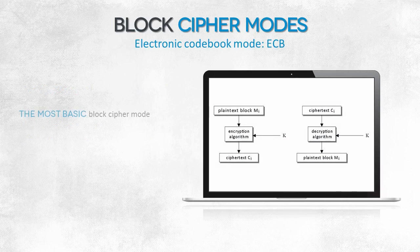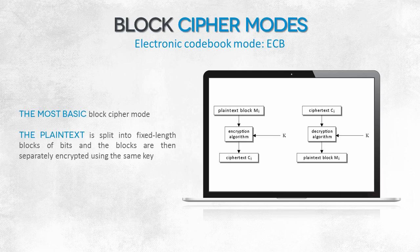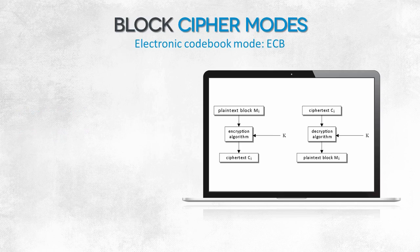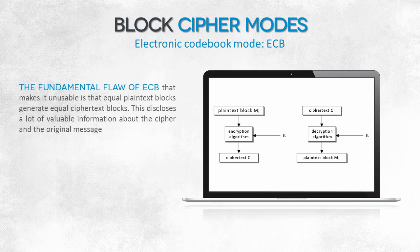Let's start with the electronic codebook mode. Assume you're a programmer. Your task is to split a long data block into pieces and perform the same operation on each piece. What should you do? Write a loop — split the data into pieces, encrypt the first one, then another one, and so on. This is how ECB works: the plaintext is split into blocks of the same length and each block is encrypted separately. If the plaintext in two blocks repeats, you'll receive two ciphertexts that are the same — each block will be encrypted into the same form.